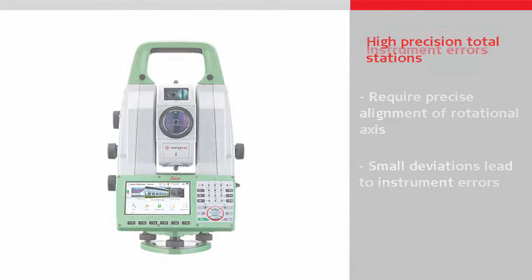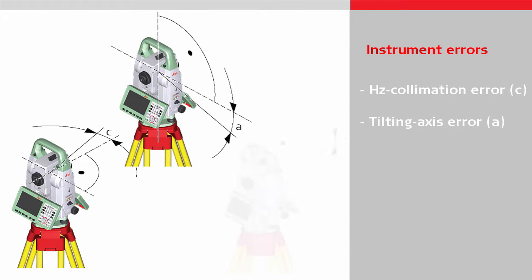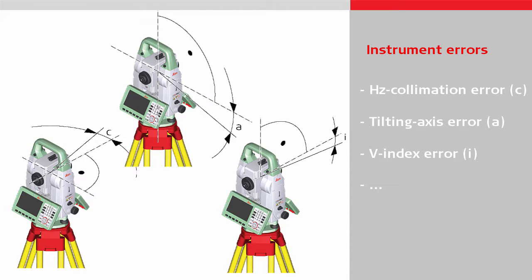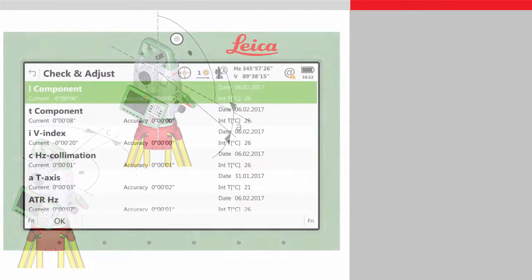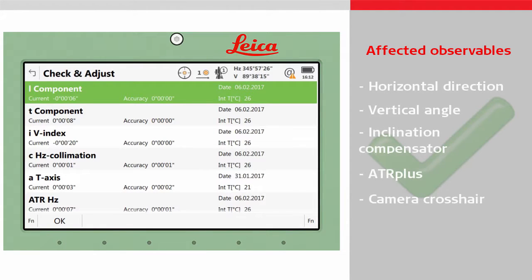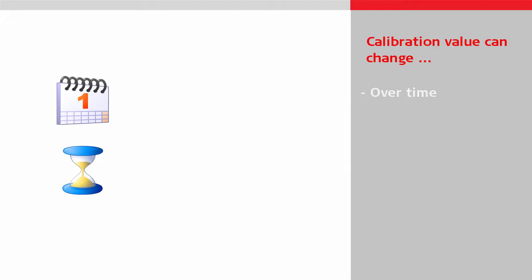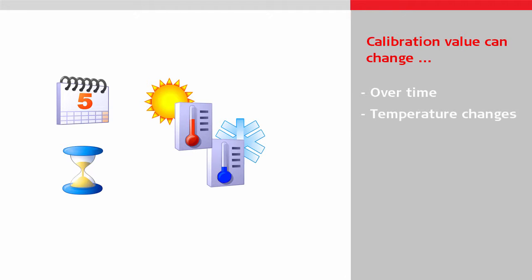These instrument errors, like the horizontal collimation error, tilting axis error, or vertical index error, can affect the measurements and therefore lead to wrong results if they are not properly considered. At the end of the manufacturing process, any instrument errors are carefully determined and adjusted so that the measurement results are correct and reliable.